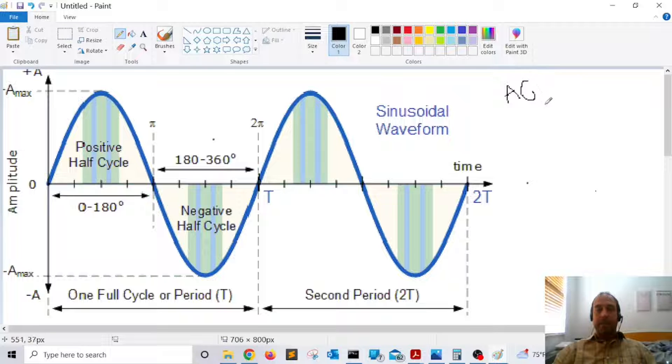This is the signal that you have in your power outlet where you plug your electronics. This signal is a sinusoidal wave. The sinusoidal wave has this characteristic: it has a positive half cycle and a negative half cycle.